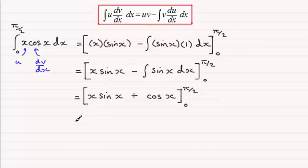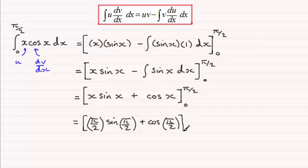And so it's just a question now of putting our limits in. So starting with pi upon 2, we'll have a bracket here as well. Starting with pi upon 2, we're going to have pi upon 2 then, multiplied by the sine of pi upon 2. And then we've got plus the cosine of pi upon 2. And then if we close that bracket, it's minus, and then we'll put 0 through. So for the first one here, 0 times anything is just going to be 0. So I'll just put that as 0. And then we've got plus the cosine of 0. And close that bracket off.